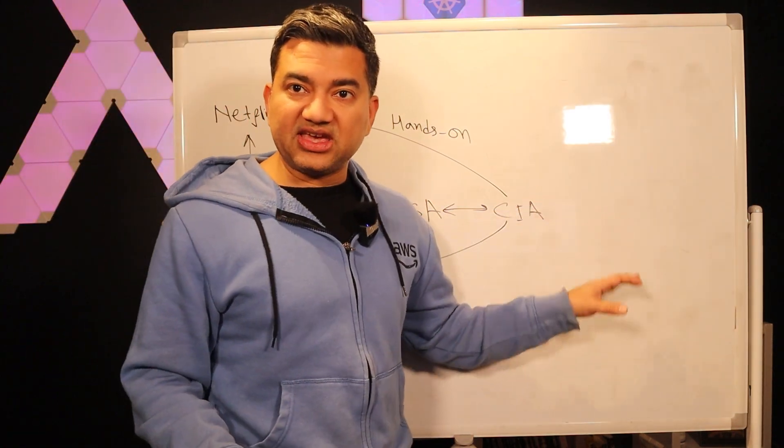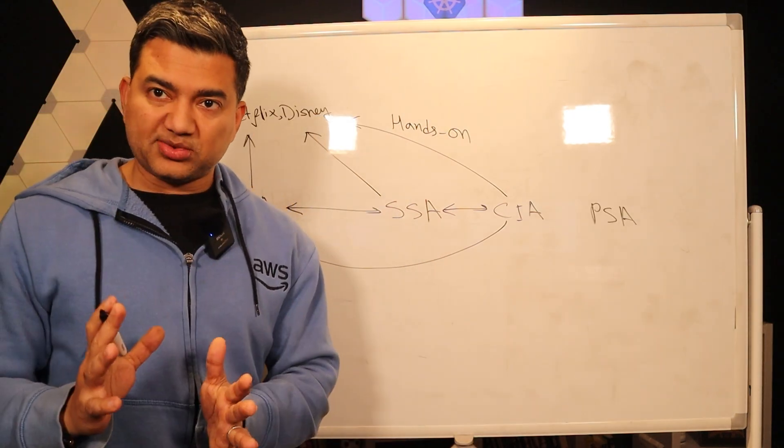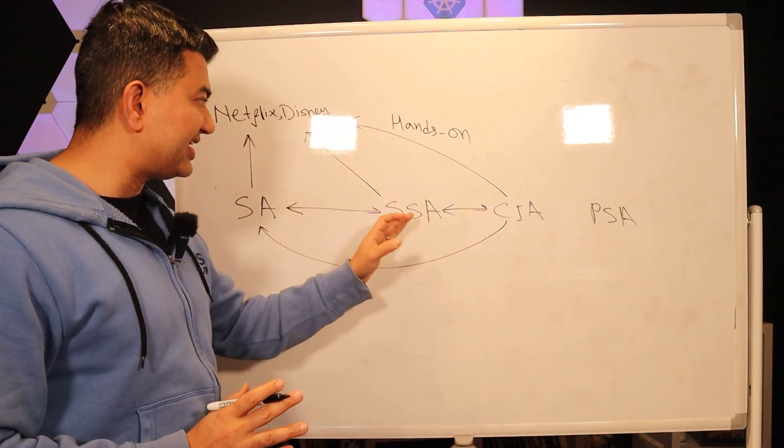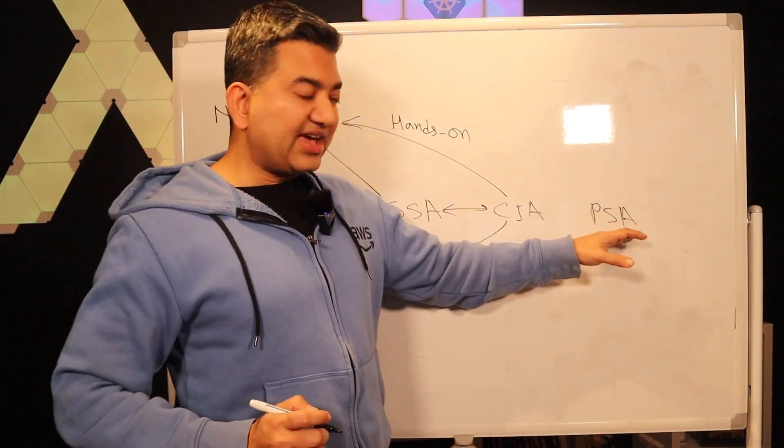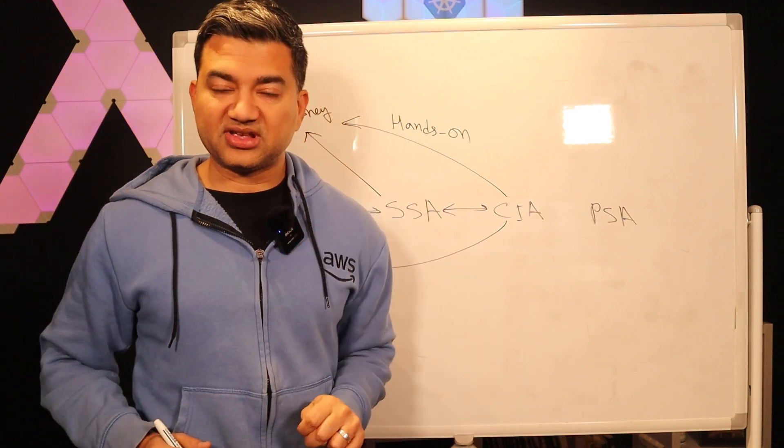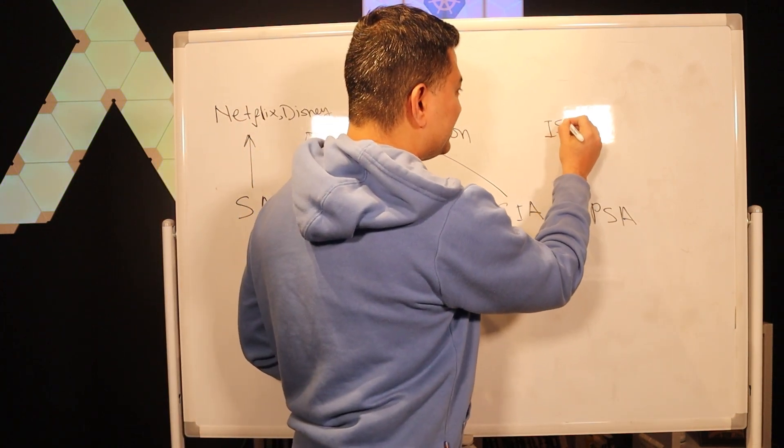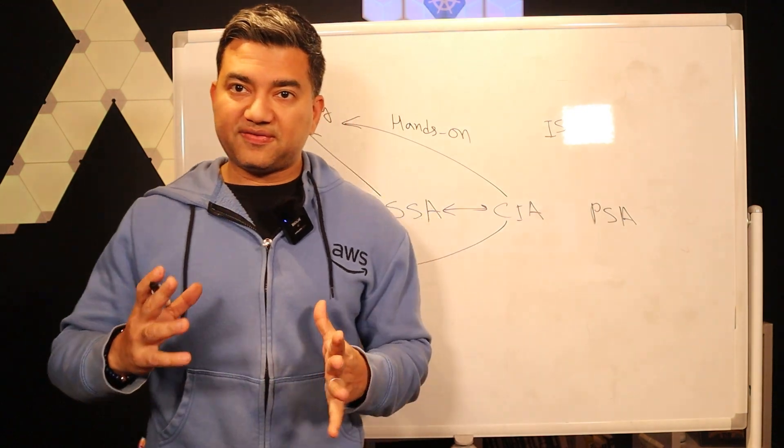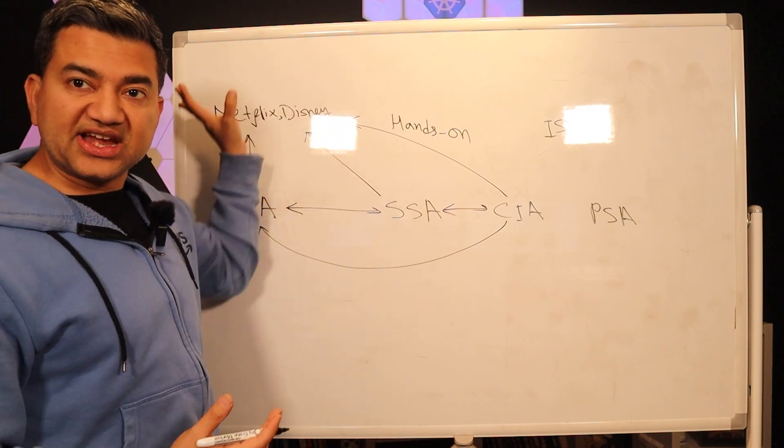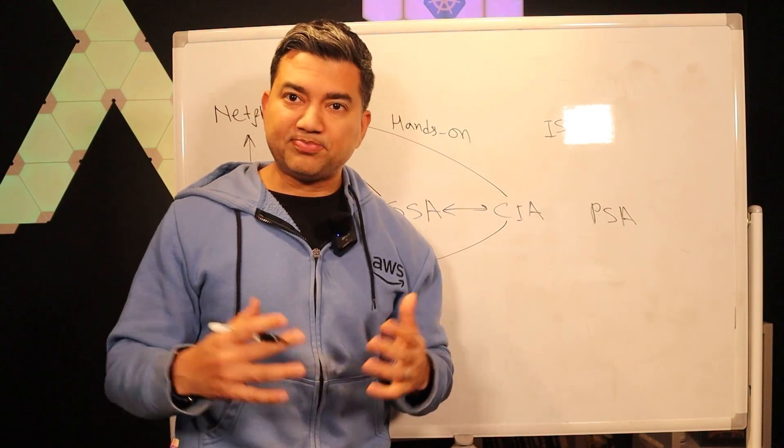Now the last type of SA is PSA or Partner SA. The end customer is different for Partner SA than Account SA, SSA, and CIA. Partner SA, the end customers are the partners. So there are two types of partners. One is ISV or Independent Software Vendors. You could think of ISVs as the products that other customers such as Netflix, Disney use. ISV could be Datadog, Splunk, etc. They are not the end customer, they are partners and these ISV products are used by the end customers.